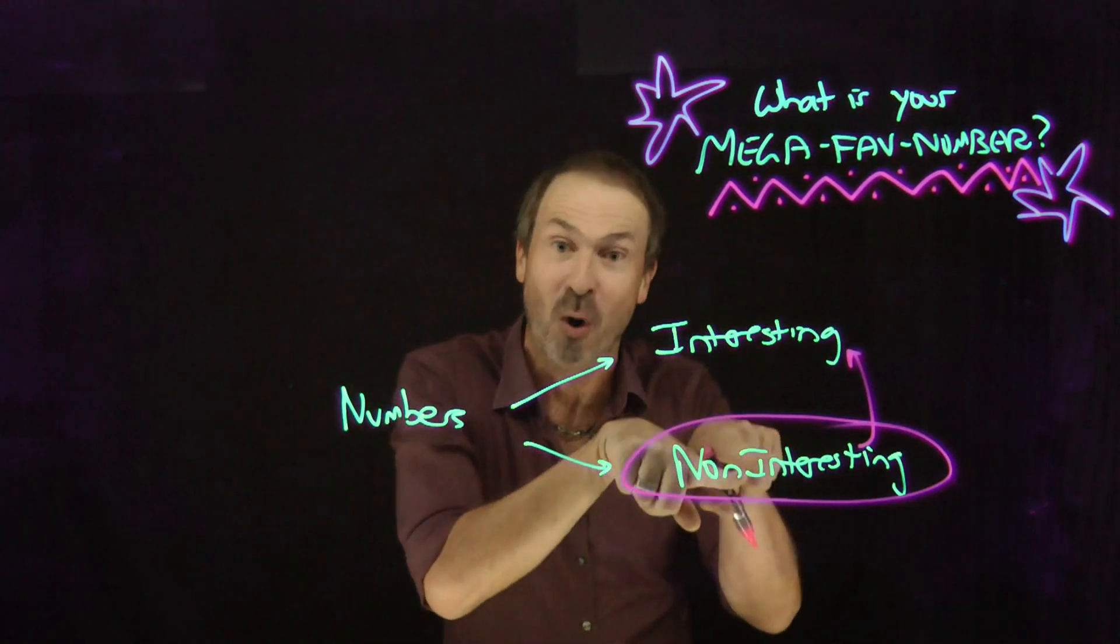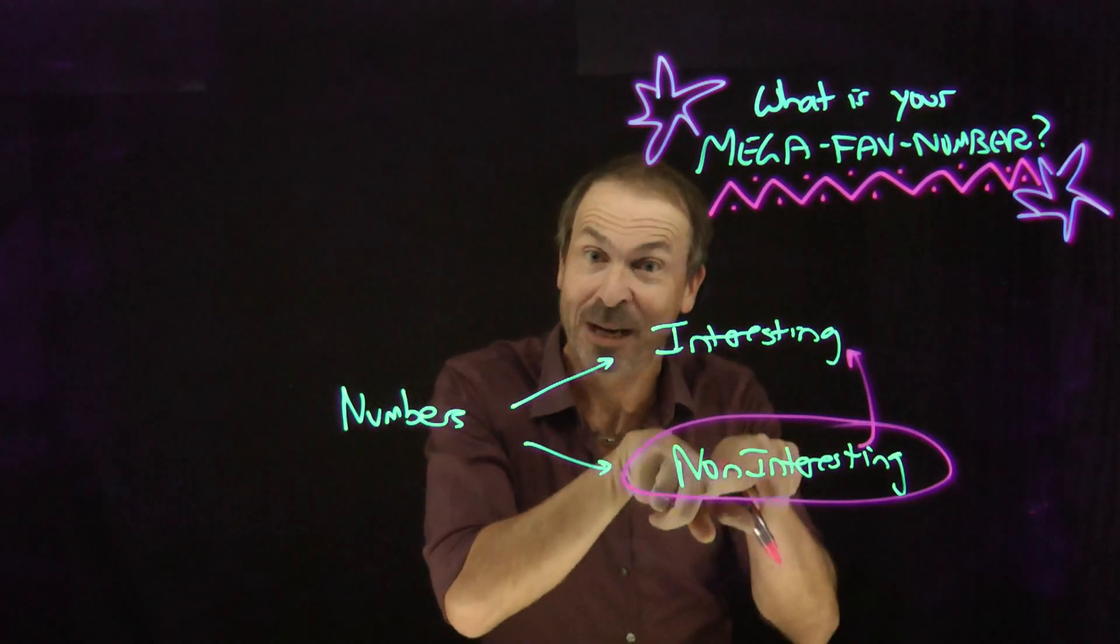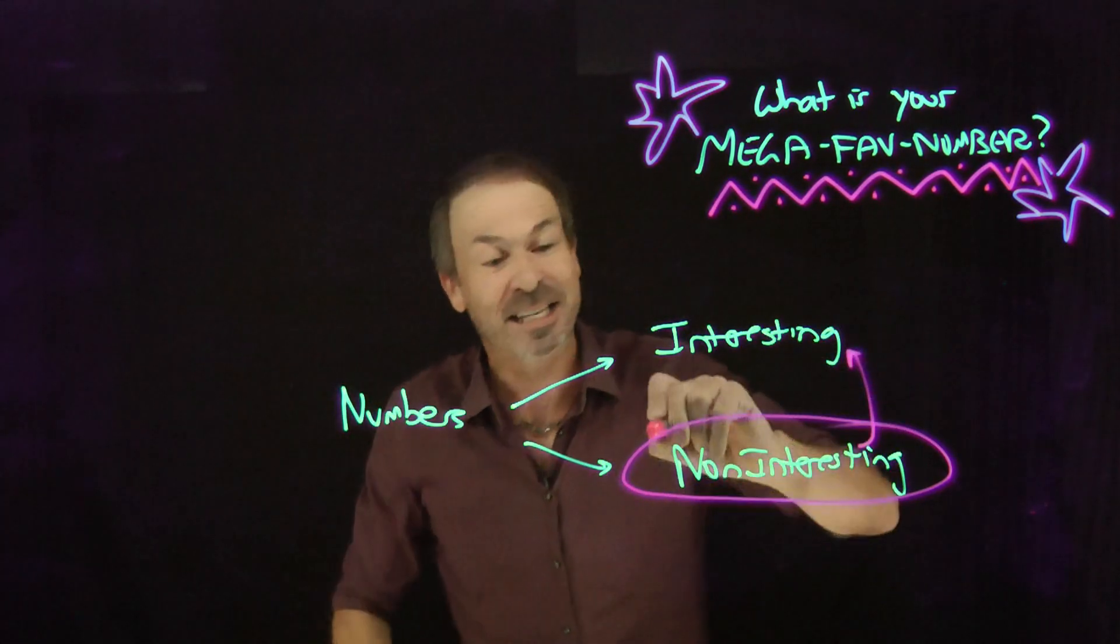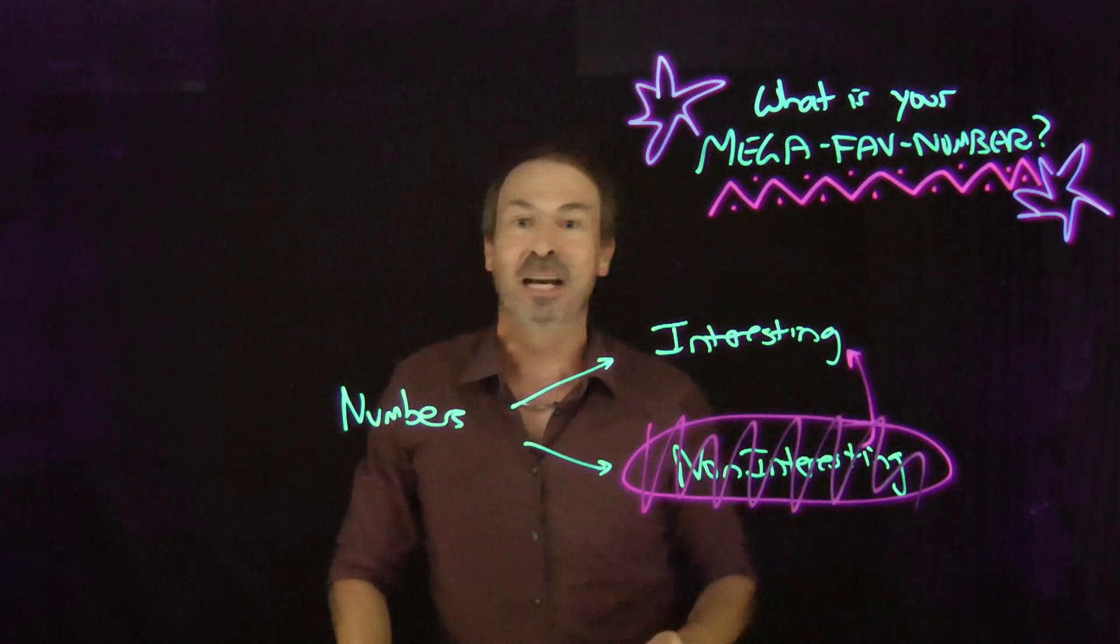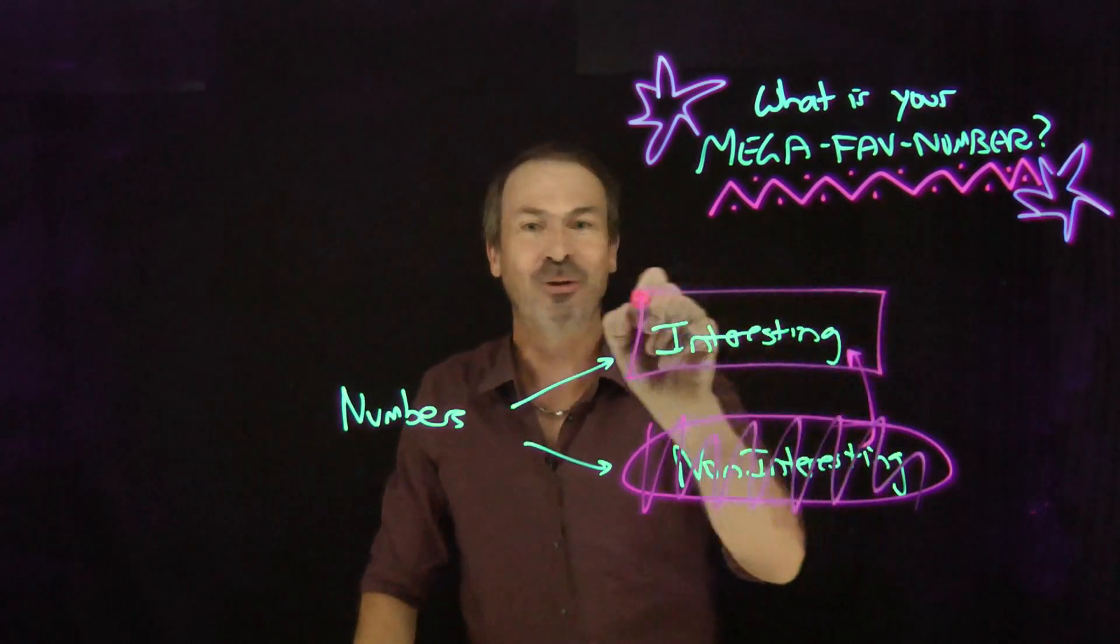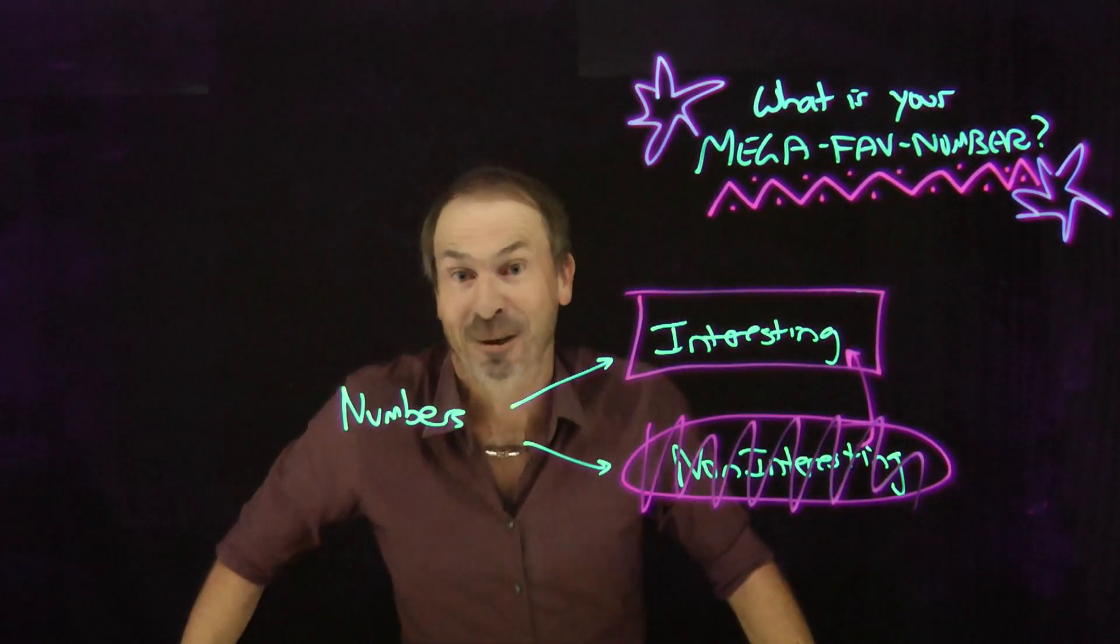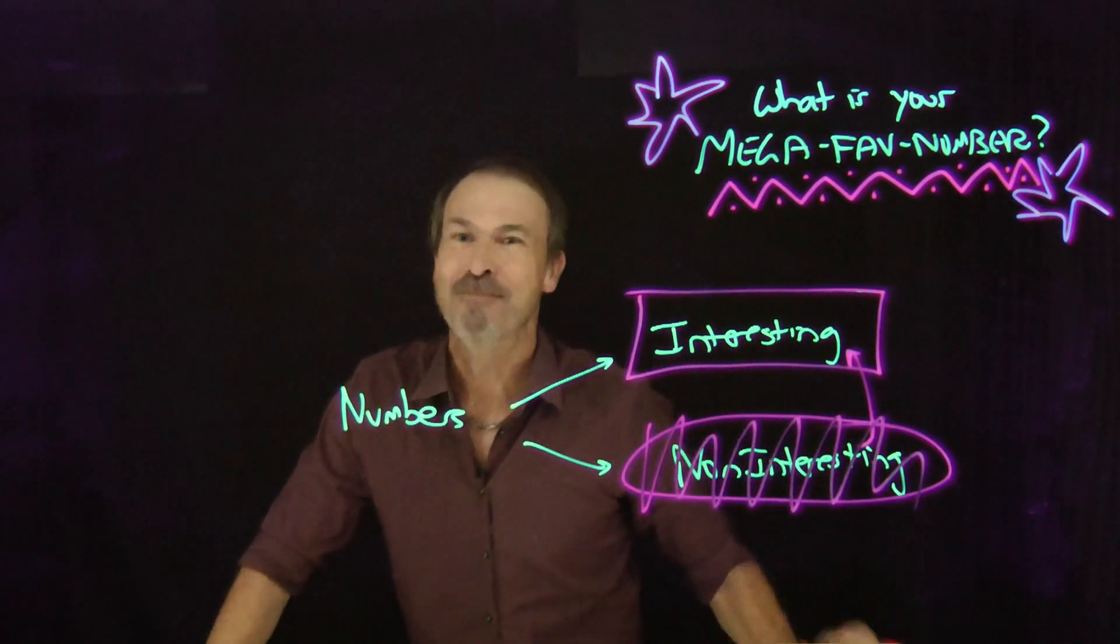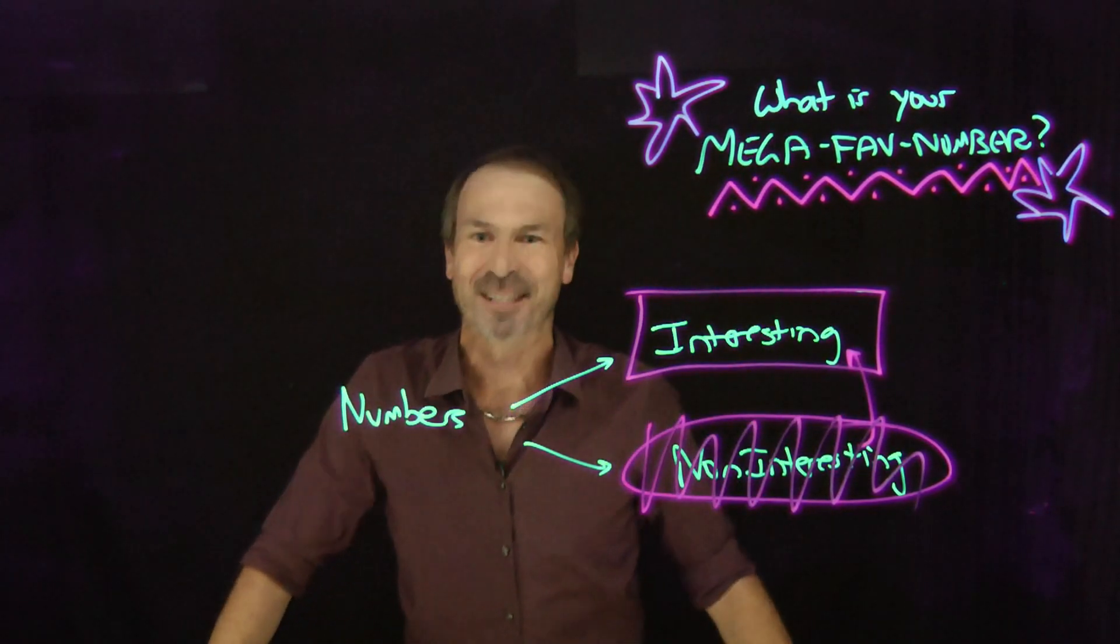But you can argue there is no smallest non-interesting number because it would make it interesting by default. And the only way out of this logical pickle is there's nothing in that set. That's the empty set, in which case all numbers are interesting. In particular, a million and one is interesting and that just jibes with my previous part of this video. Love it. A million and one is my mega-favorite number and I'm going to stick with it.